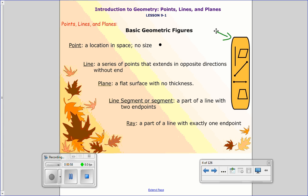Then comes a line, which is a series of points that extends in opposite directions without end. So a line is made up a series of points. And this one right here is actually an example of one. And it has no end in sight. So a lot of the times, too, they might put arrows at the end to make people know that it is a line.